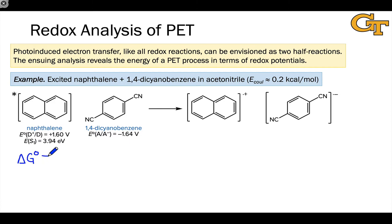First, naphthalene is undergoing photoexcitation or has undergone photoexcitation, so we have the energy of the S1 state available to use to power this photoinduced electron transfer process, and that amounts to negative 3.94 eV or electron volts.